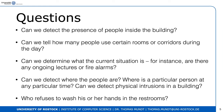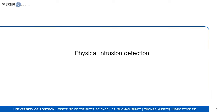This raises some questions: Can we detect the presence of people inside the building? Can we tell how many people use certain rooms or corridors during the day? Can we determine the current situation — for instance, whether there are ongoing lectures in a room, or a fire alarm where everyone is trying to flee? Can we detect where people are, or detect physical intrusion? And who refuses to wash their hands in the restrooms? We did this research some years ago, before the current situation with the coronavirus.